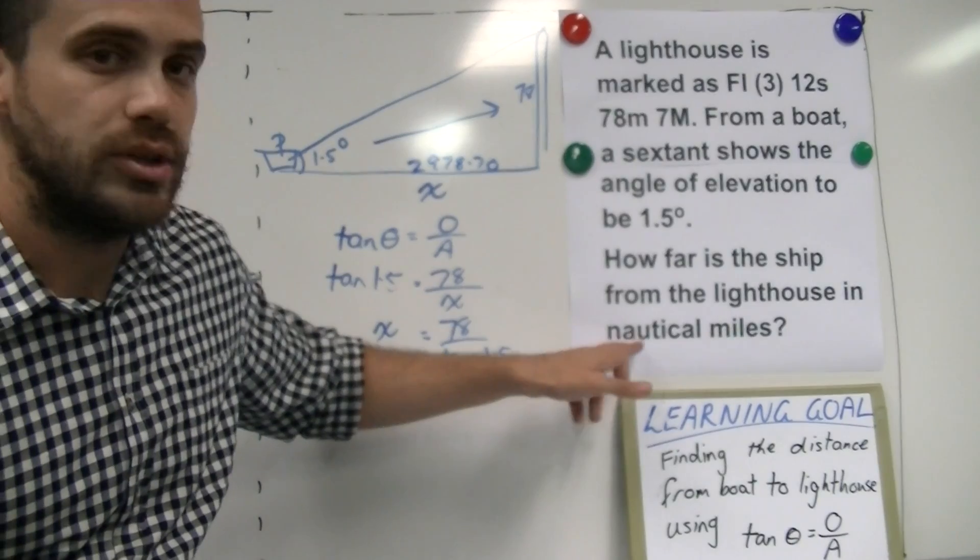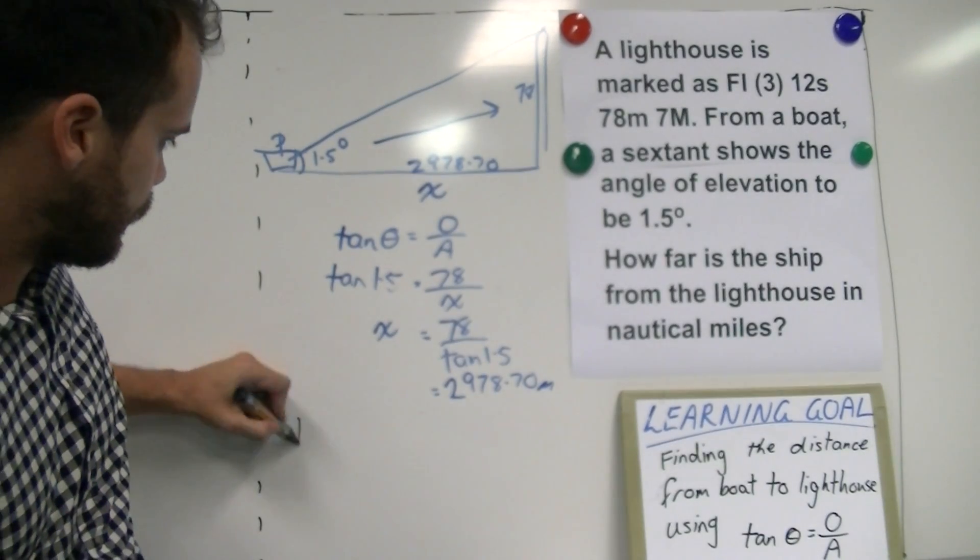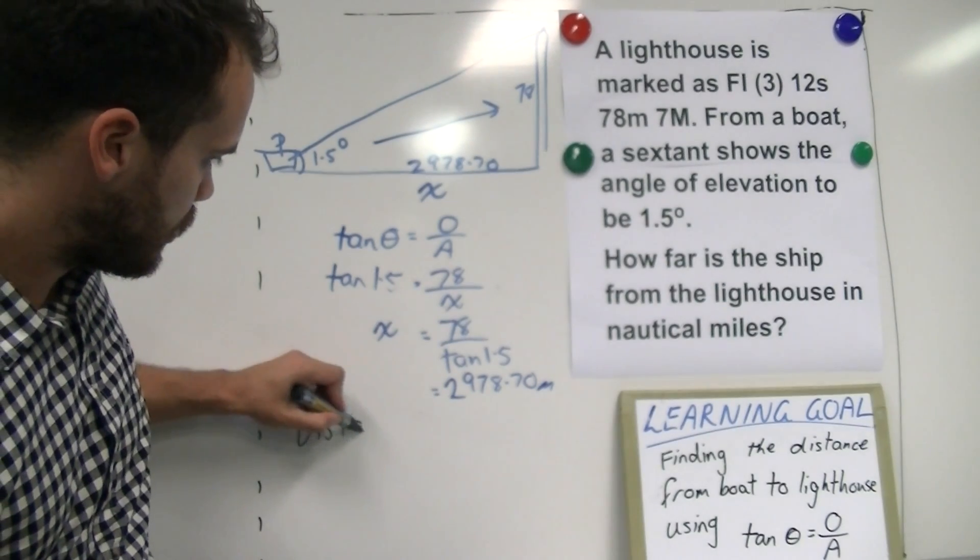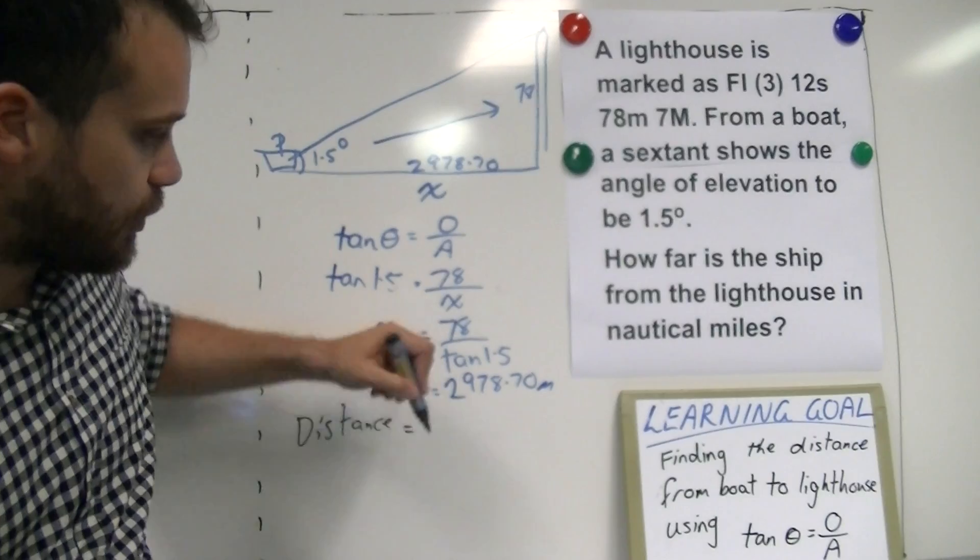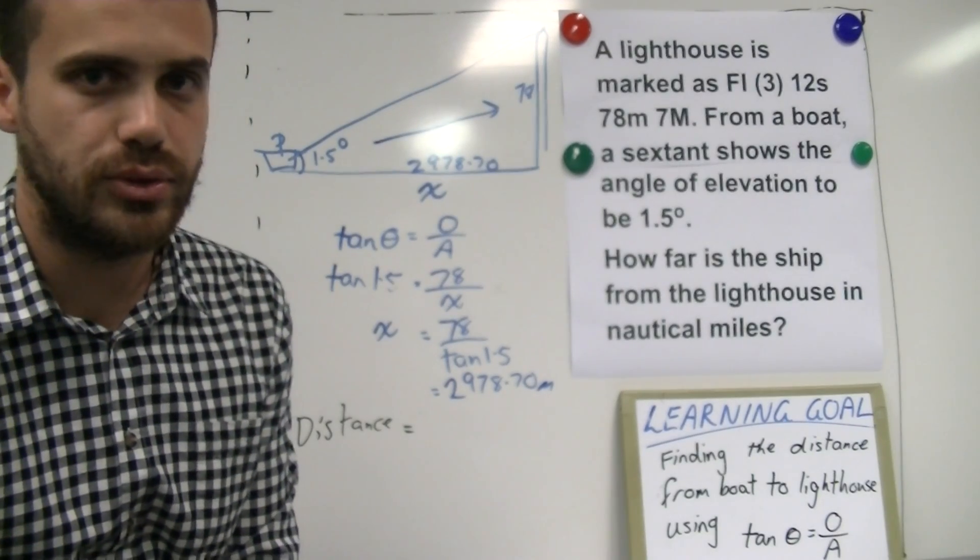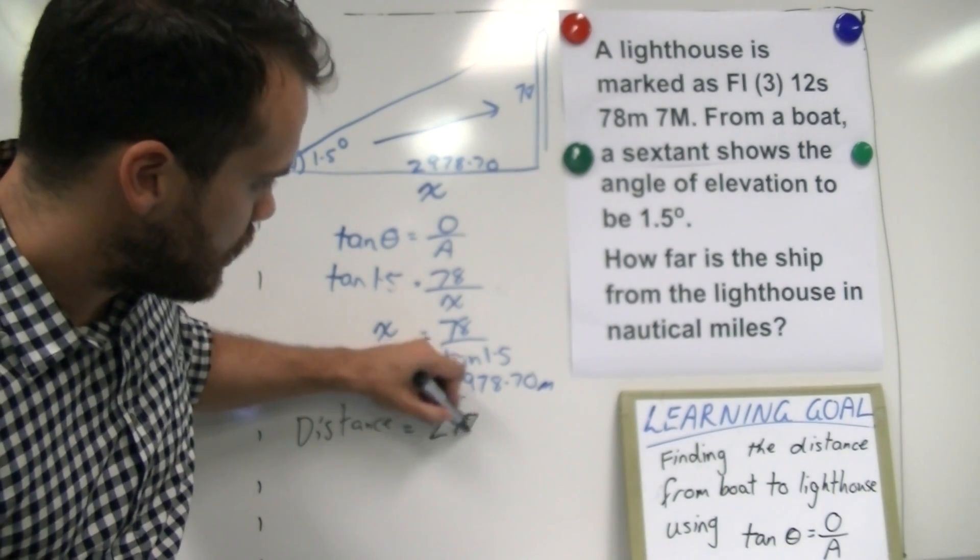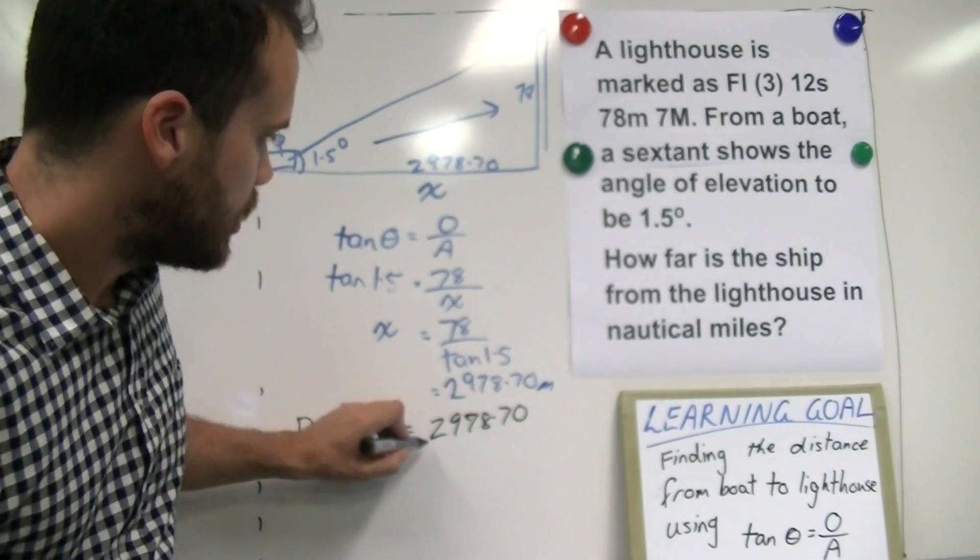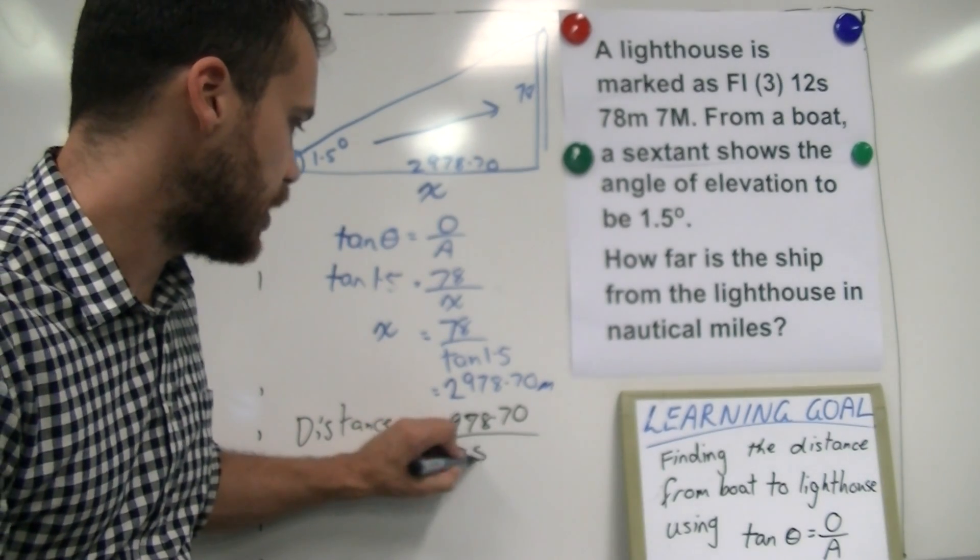But we want to know our answer in nautical miles. To convert metres to nautical miles, you're going to have to divide by 1852. That's a number you're going to have to remember.